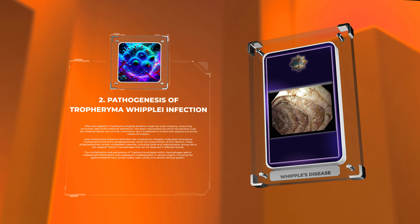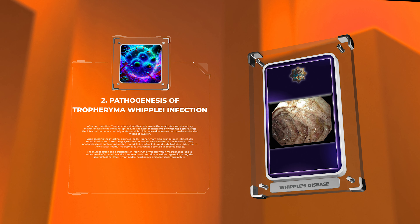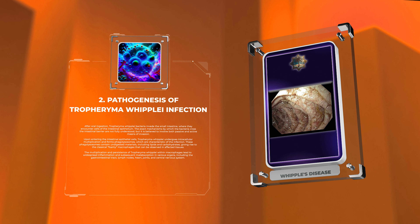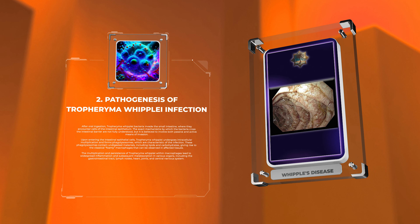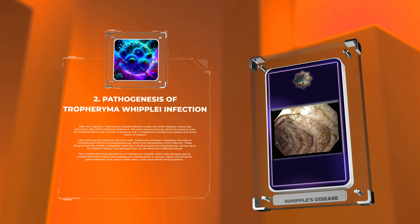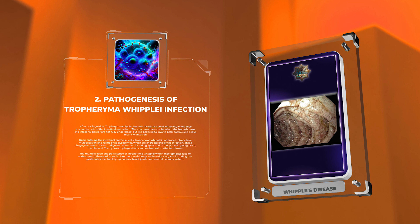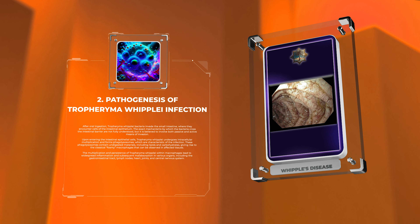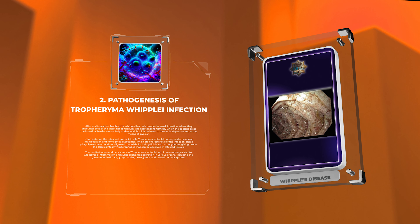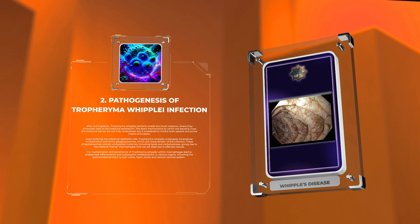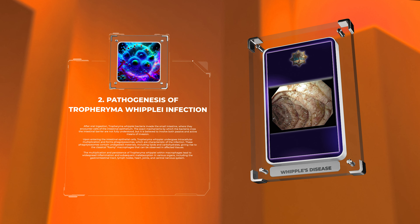This gives rise to the classical foamy macrophages that can be observed in affected tissues. The multiplication and persistence of Tropheryma whipplei within macrophages lead to widespread inflammation and subsequent malabsorption in various organs, including the gastrointestinal tract, lymph nodes, heart, joints, and central nervous system.